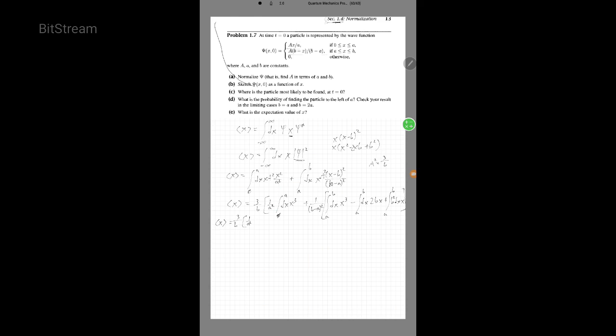So now we go ahead and we integrate X to the third. That's just going to end up being X to the fourth over four from zero to A, and then that'll be plus this guy.